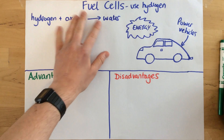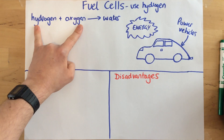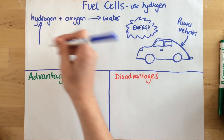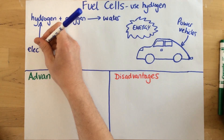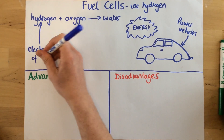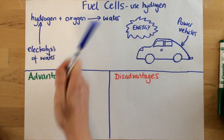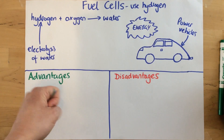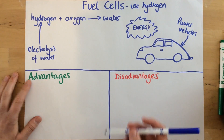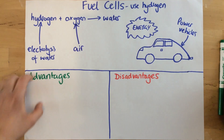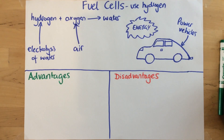Let's have a quick look at this word equation. Our reactants are hydrogen and oxygen — where do they actually come from? We could get hydrogen by doing the electrolysis of water, using electric current to separate the water into hydrogen and oxygen. We could get the oxygen from the air or from the electrolysis of water as well. So those are our reactants that are required.